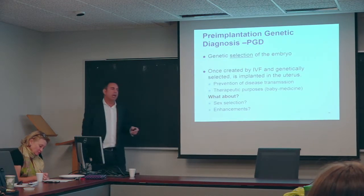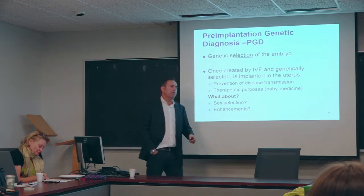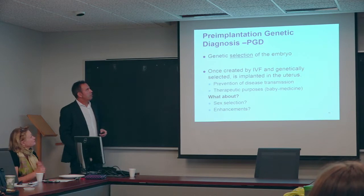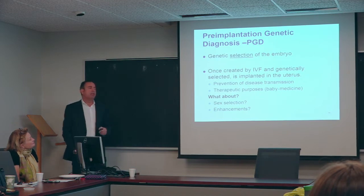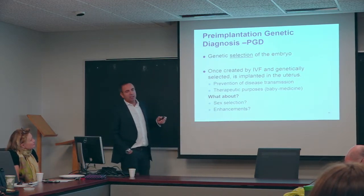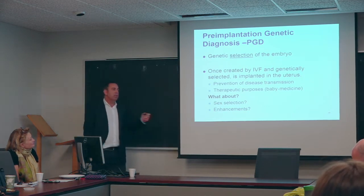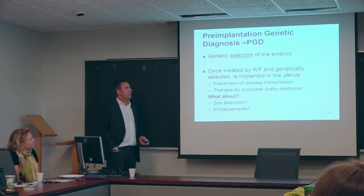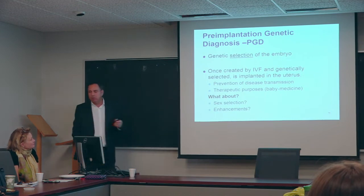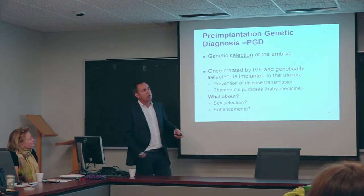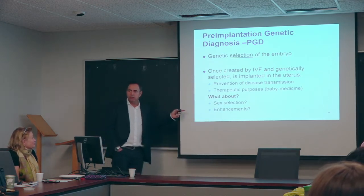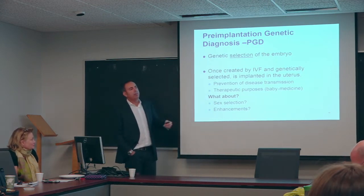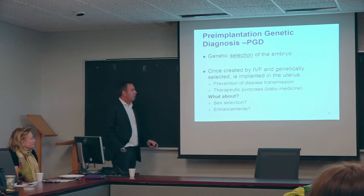I would like to finish my overview regarding reproductive technologies making a reference to PGD—preimplantation genetic diagnosis—which is rather different from CRISPR-Cas9. In PGD, we have a genetic selection of the embryo, so it can be selected for prevention of disease transmission from parents to children, or for therapeutic purposes in the case of saviour siblings. But new questions are arising: should PGD be employed to allow sex selection? Of course, that's not my point of view, but it's one of the debates right now in Europe. And what about enhancements?